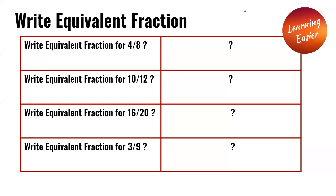An equivalent fraction for 4 over 8 is 2 over 4, because when you divide both the top and the bottom by 2, you get 2 over 4.